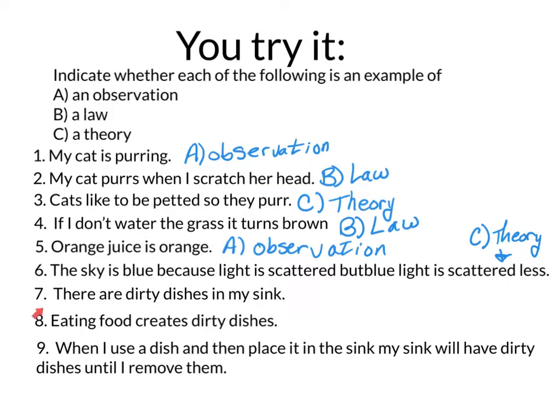Number seven. There are dirty dishes in my sink. That's an observation. Number eight. Eating food creates dirty dishes. That's a theory. Probably not a correct theory, but a theory. For example, if I eat an apple, that doesn't create dishes. So not all eating of food creates dirty dishes, but it is a theory, so we're going to mark it as a theory.